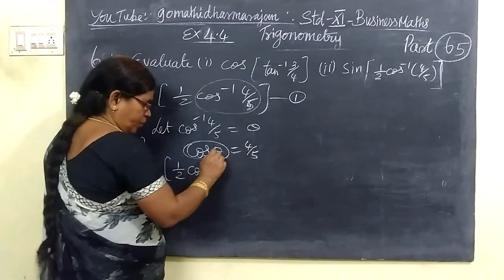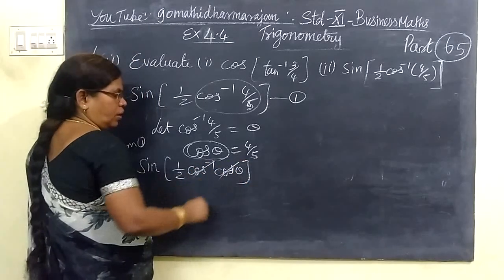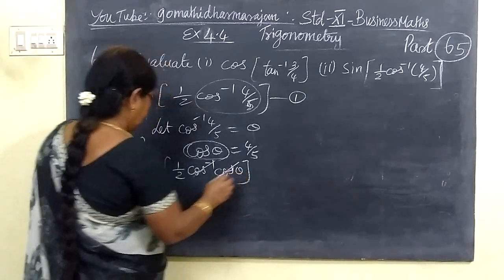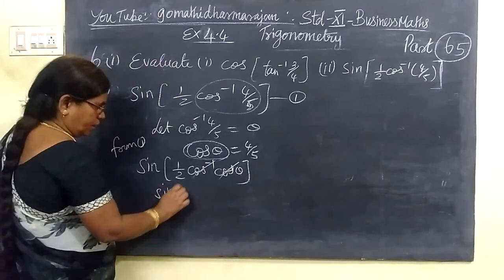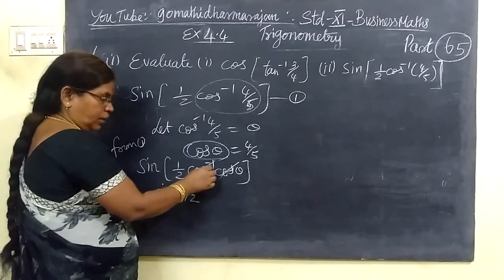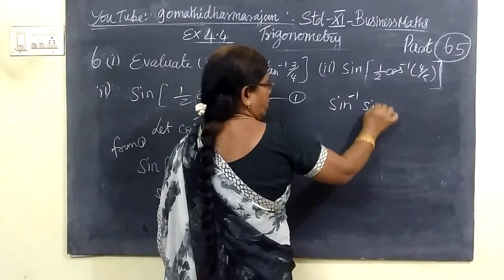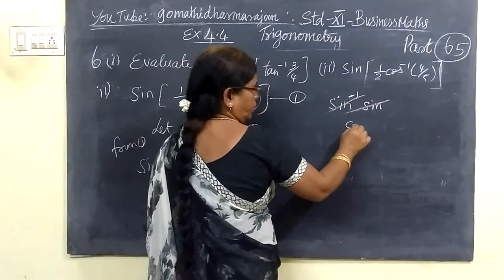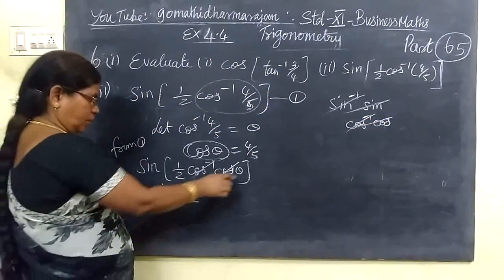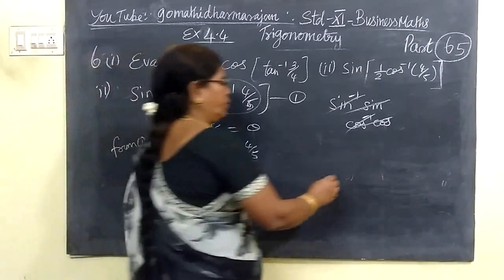So the inverse of cos theta equals 4 by 5. Since sin squared theta plus cos squared theta equals 1, we have sin squared theta equals 1 minus cos squared theta. cos theta equals 4 by 5, so sin squared theta equals 1 minus 16 by 25, which equals 9 by 25. Therefore sin theta equals 3 by 5.